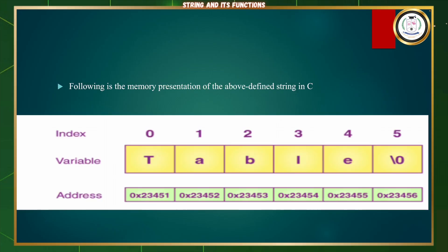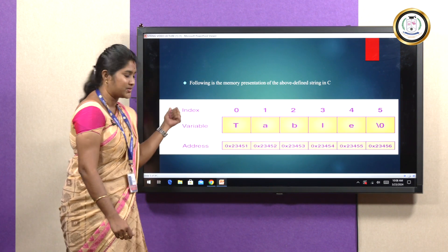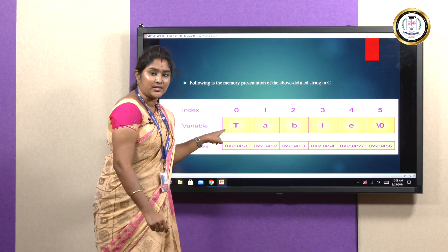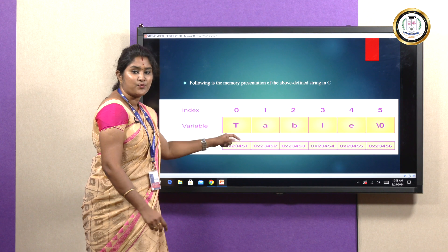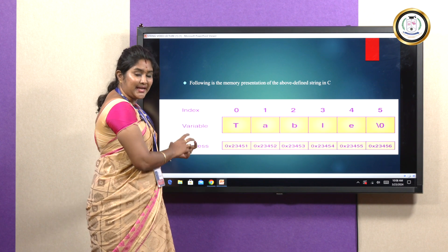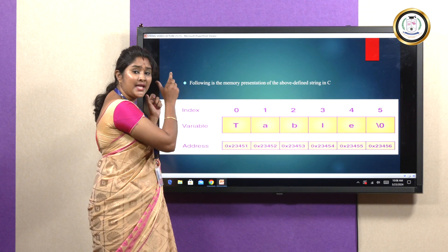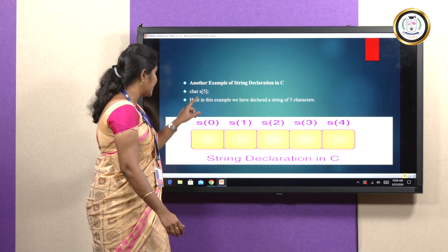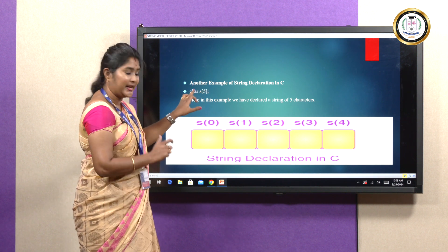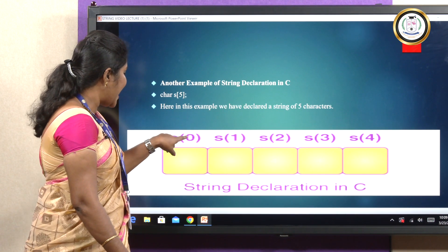This is the memory representation of our string. For example, 0, 1, 2, 3, 4, 5 are the index values. The variable contains the string 'table' as input. These are the memory allocation addresses for each and every character, which are allocated by the system itself. We just provide the memory allocation value in the array size alone. Another example uses character 'S' with a specified size, an array name, characters, and corresponding index values.